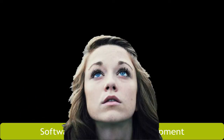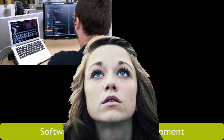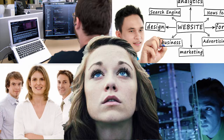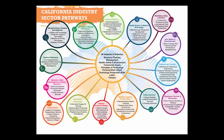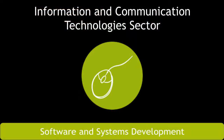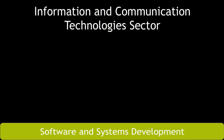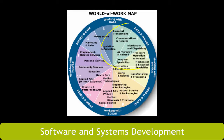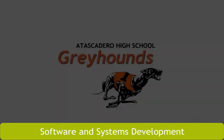So how do you start your journey to a career in software and systems development? It begins by choosing a pathway. The California Department of Education has identified 15 industry sectors and 58 career pathways based upon the type of work done. The software and systems development pathway falls under the information and communication technologies industry sector — where people work with data and technology.